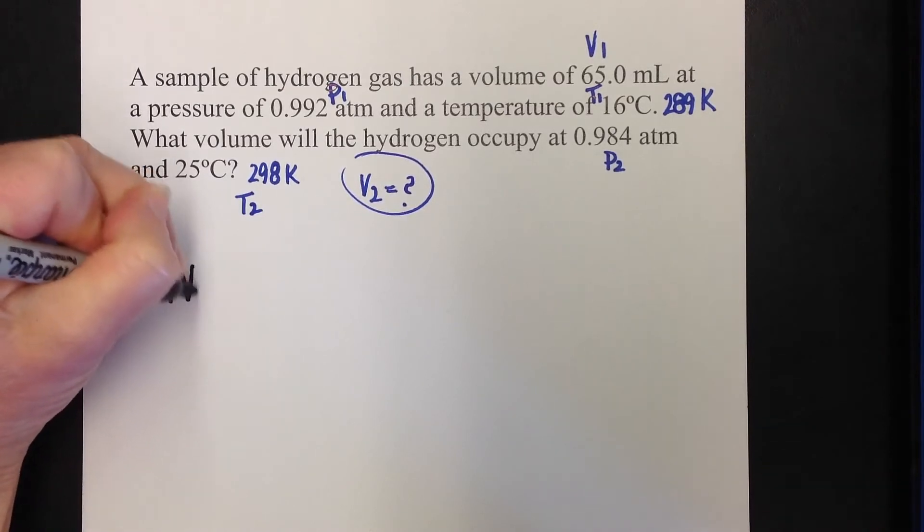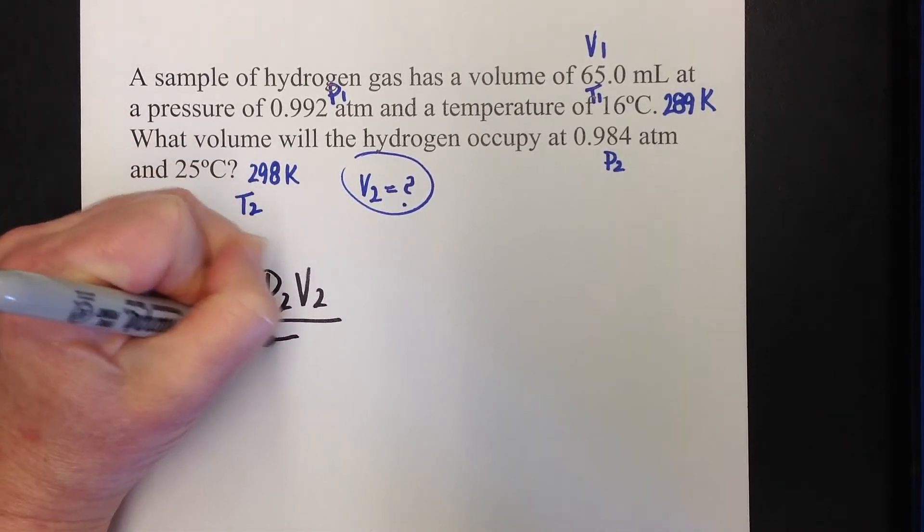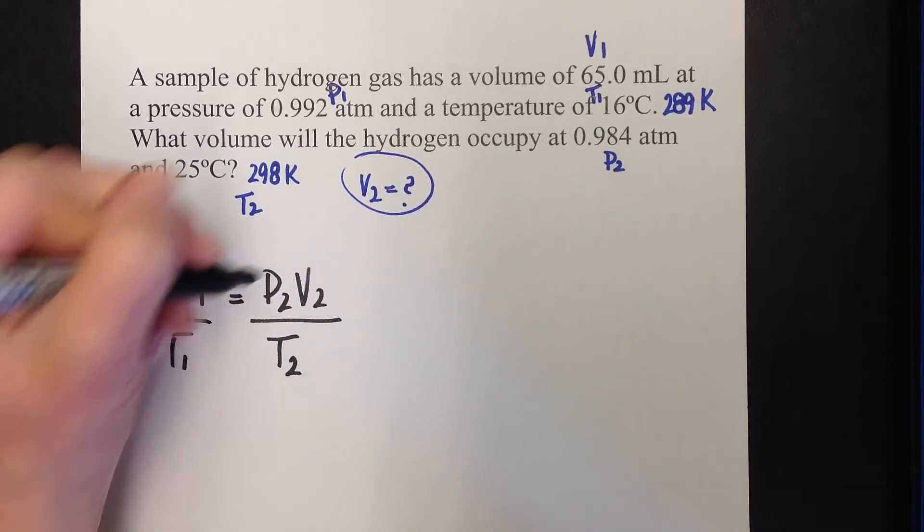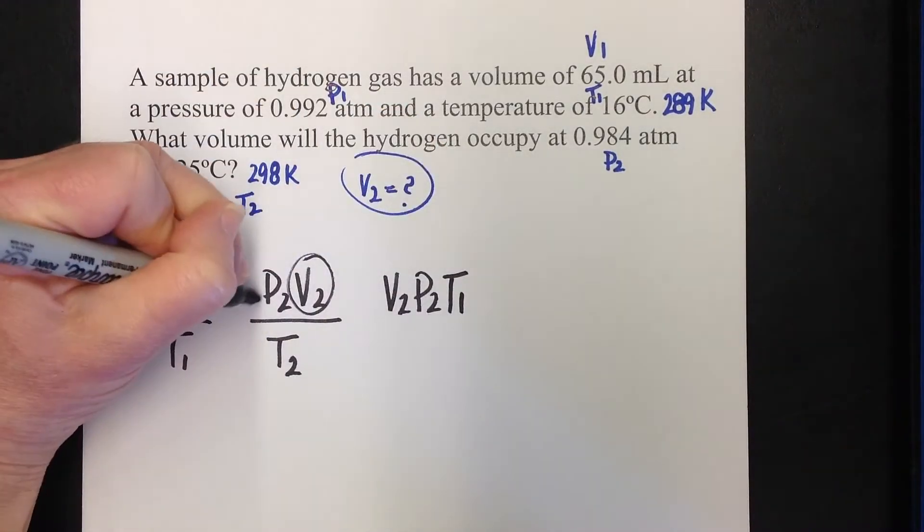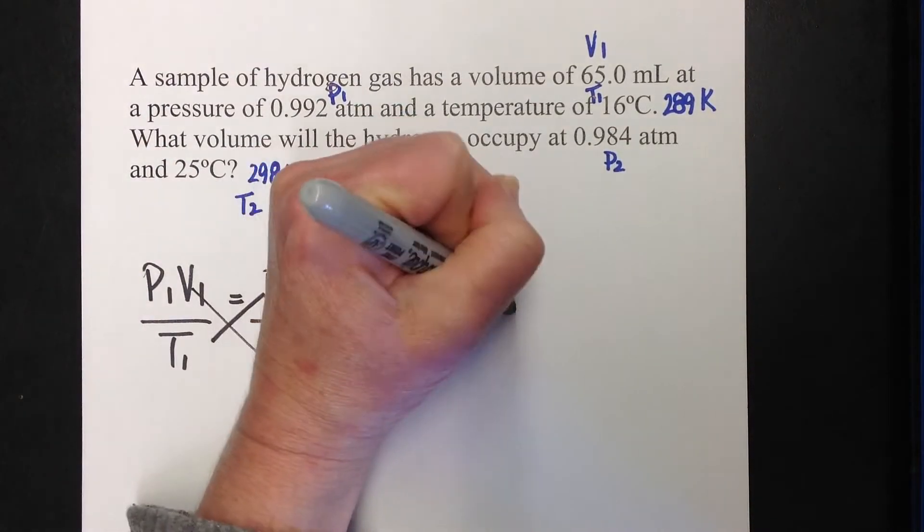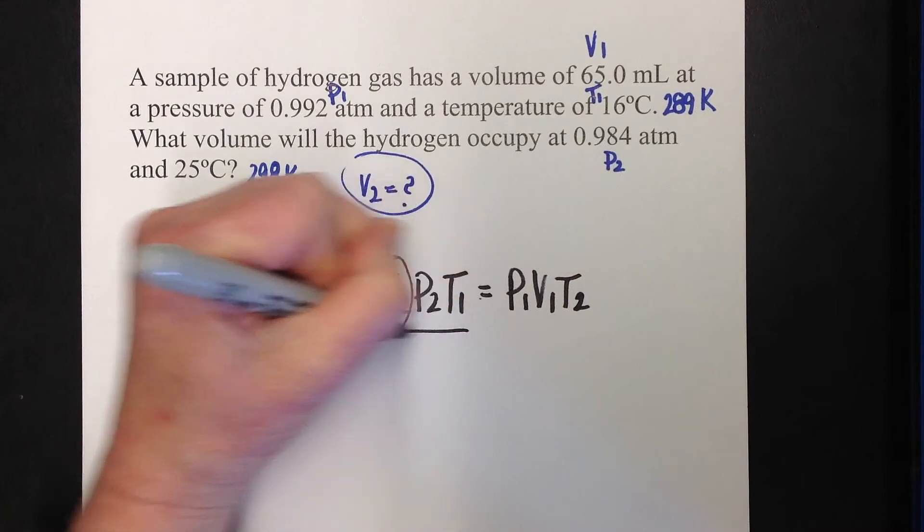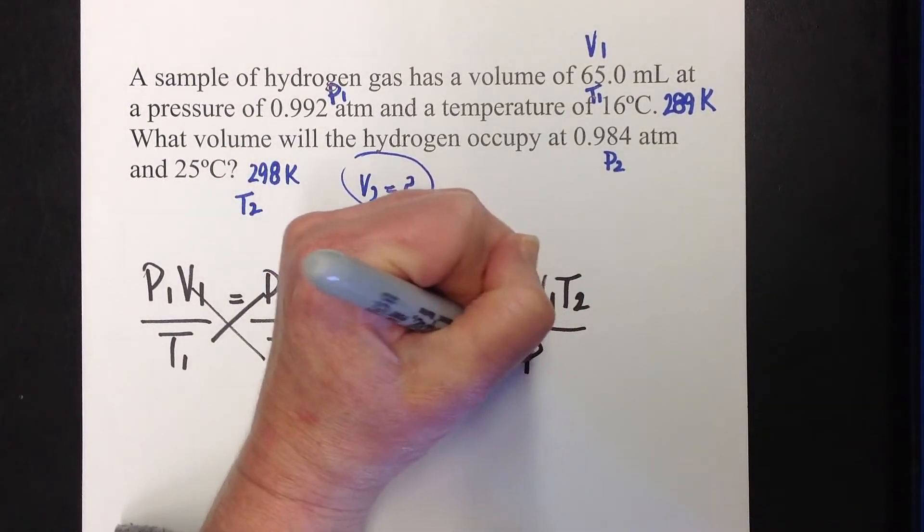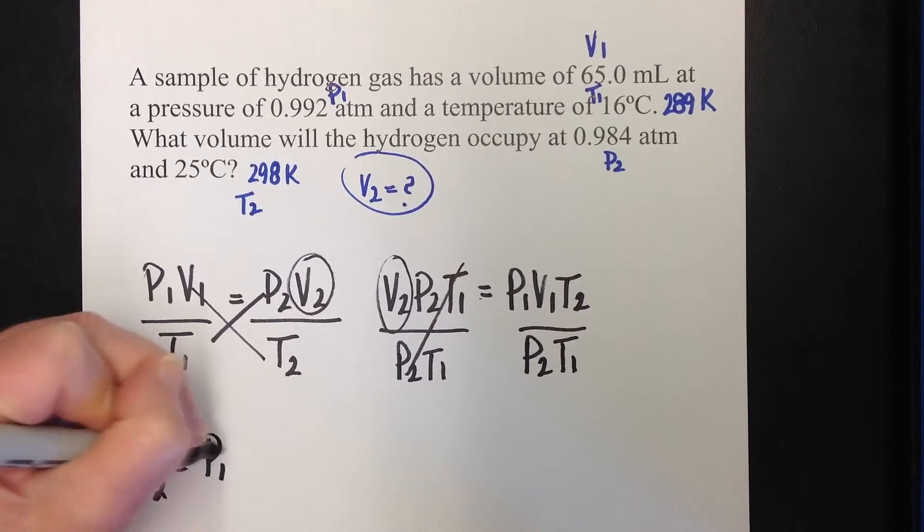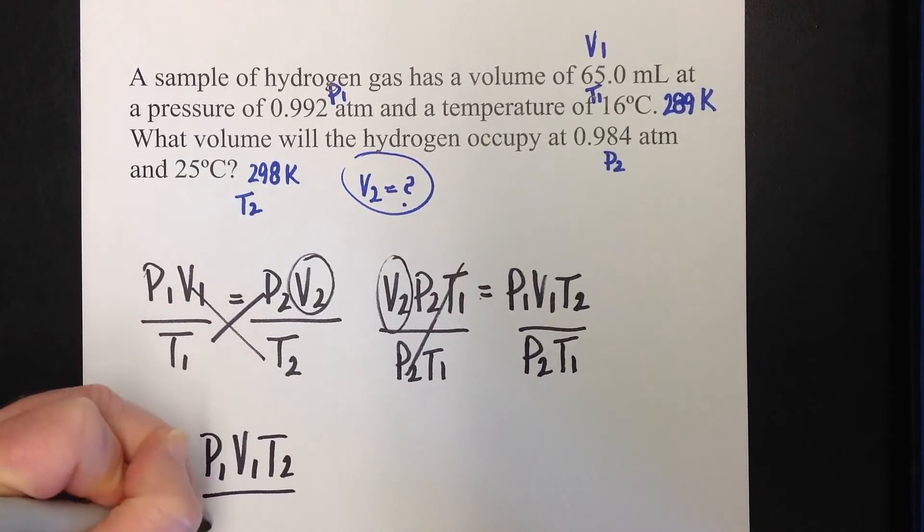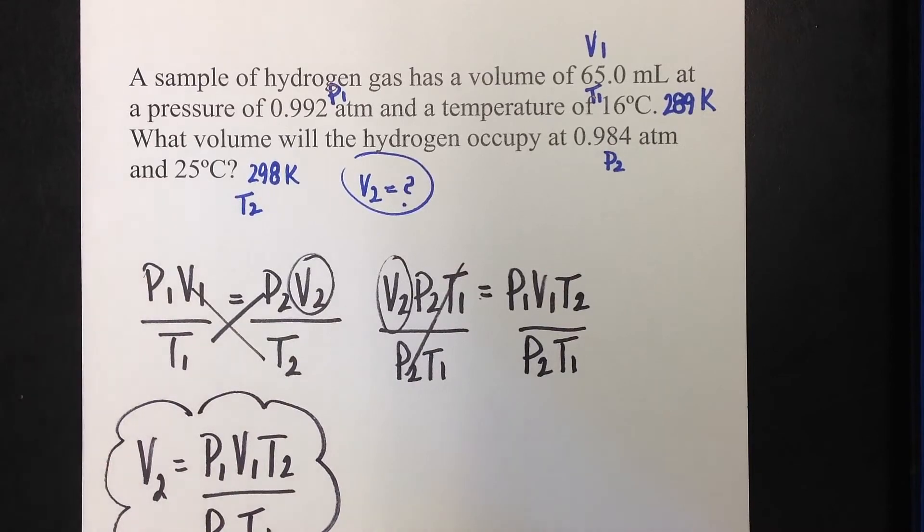P1V1 over T1 equals P2V2 over T2. I am solving for V2, so I'm going to cross-multiply - V2, P2, T1. Now I'm going to do this side equals P1V1T2. I am solving for V2, so I'm going to divide both sides by P2T1. So V2 equals P1V1T2 over P2T1. This is the formula that I am using. It's all set up and ready to go.